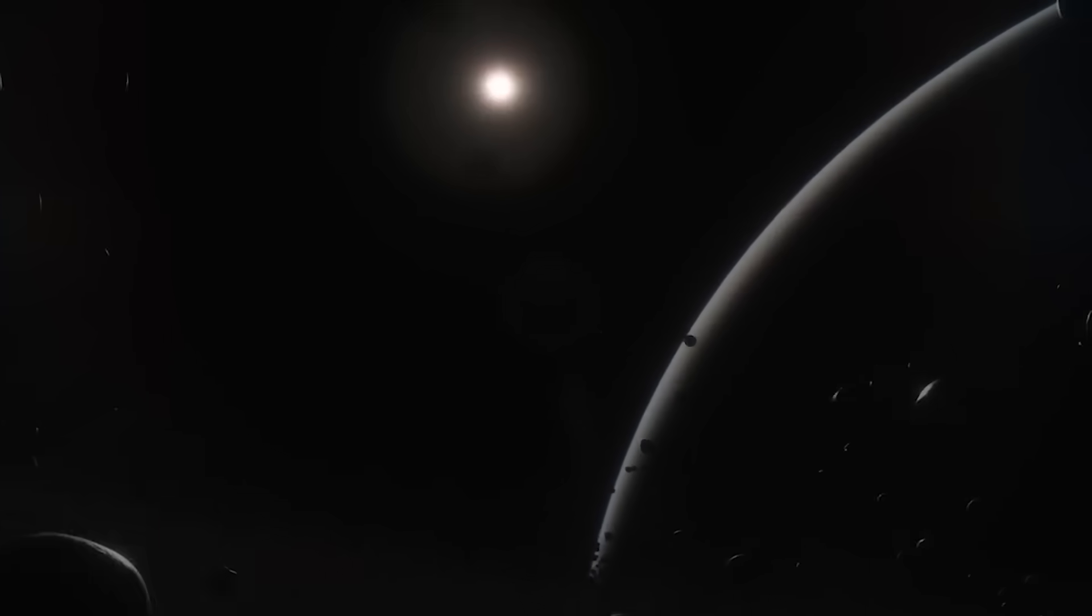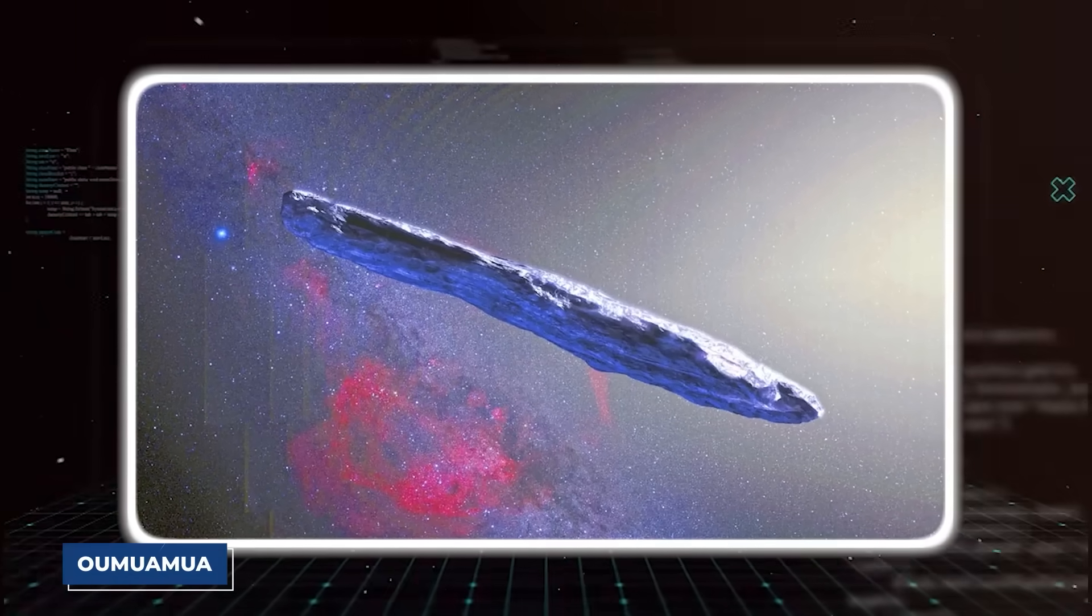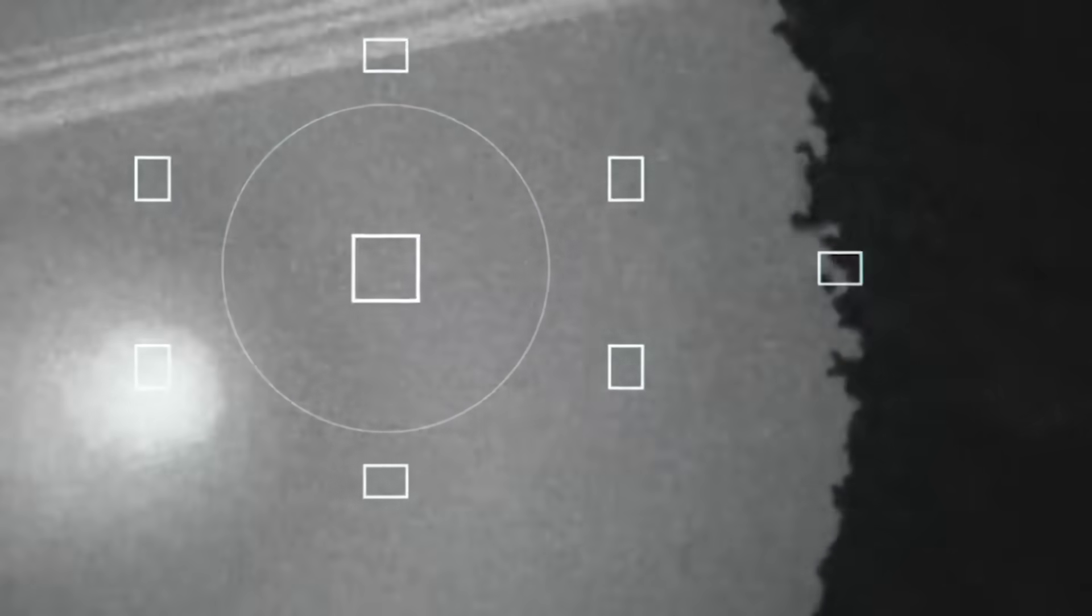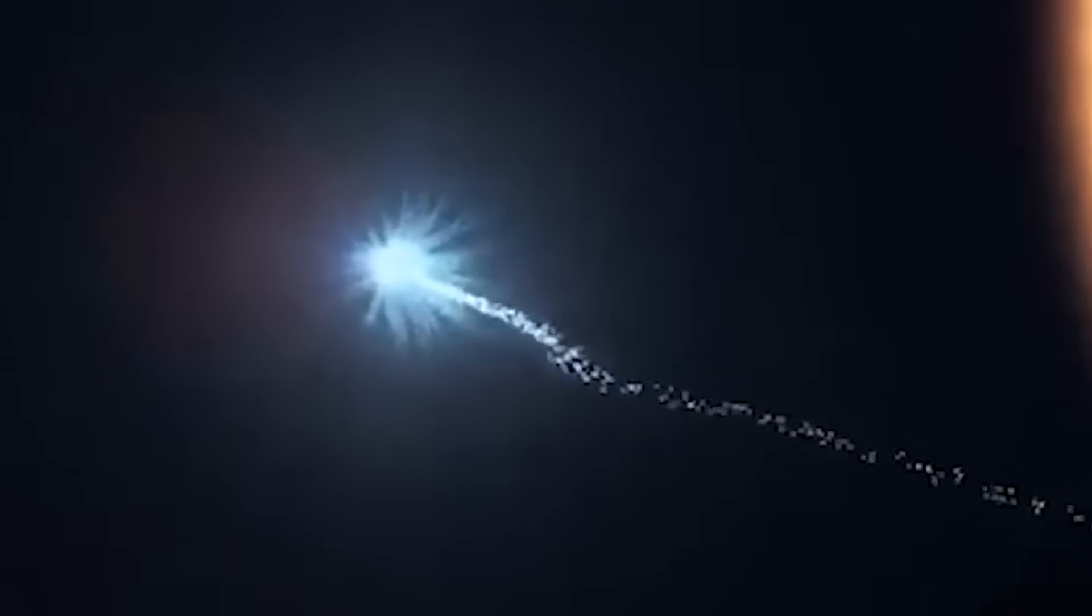At first, the world of astronomy breathed a collective sigh of relief. Unlike the weird, cigar-shaped Oumuamua, this one looked like a regular comet. It had a fuzzy glow around it, a coma, which is exactly what you'd expect from a giant ball of ice and dust getting closer to the sun. The ice warms up, turns to gas, and creates a beautiful halo. Case closed, right? Wrong.